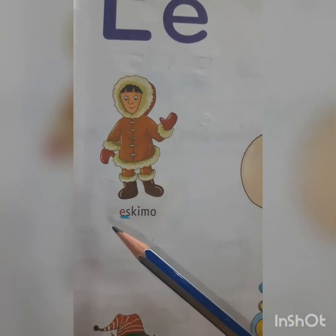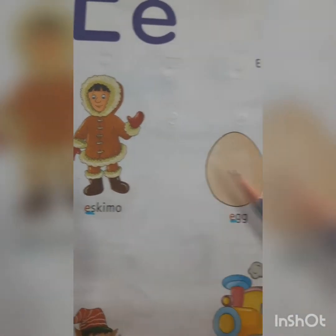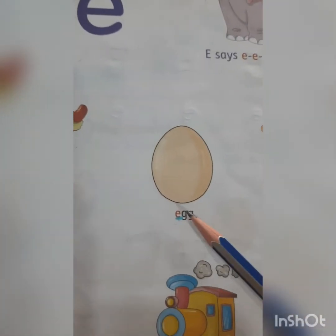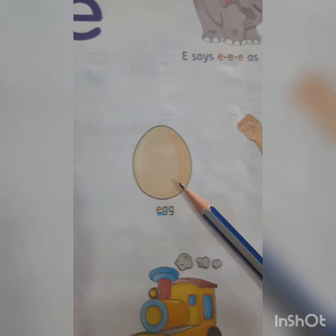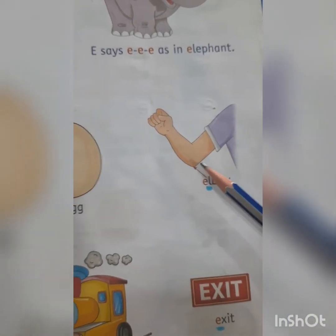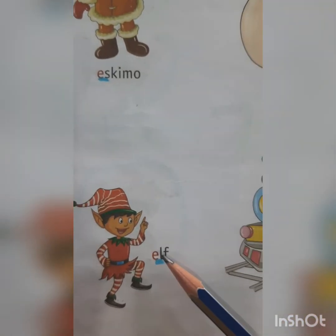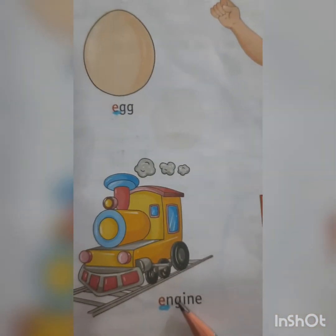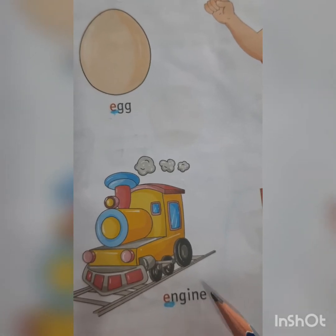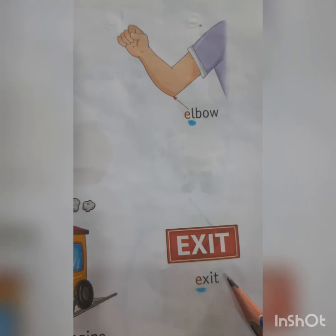Eskimo. E-S-K-I-M-O. Eskimo. E-L-B-O-W. Elbow. E-L-F. Elf. E-N-G-I-N-E. Engine. E-X-I-T. Exit.